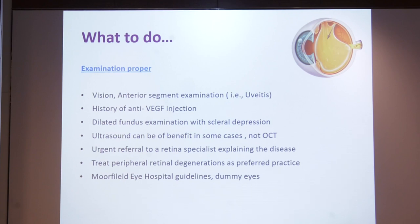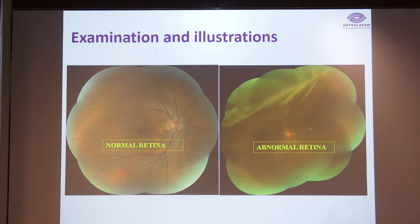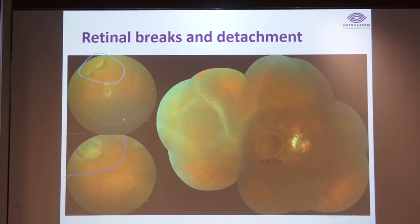Treat peripheral retinal degenerations according to the preferred practice pattern you follow. Personally I give the Moorfields guidelines to patients — it feels very handy and patient acceptance is much better along with dummy eye demonstrations. These are a few illustrations I have in my clinic which I show to patients: a normal retina, an abnormal retina, and a detached retina. For a knowledgeable person, or one who is partially Google-trained, these illustrations can be very educational.